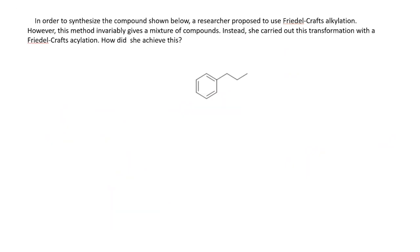The question is how to synthesize a specific compound using a Friedel-Crafts acylation reaction. If you attempt a Friedel-Crafts alkylation, you invariably end up with a mixture of the desired compound and the rearranged product — which might even be the major product. To avoid this, you want to use a Friedel-Crafts acylation.